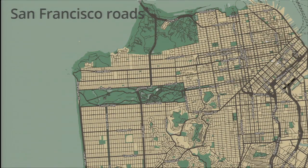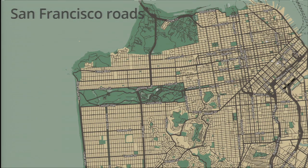Contrast that with another map — this is a map all about San Francisco roads. The information we've removed is everything except the road labels. The roads themselves are dark and very prominent, and in general we've chosen a heavier color scheme, so the overall map feels a lot more serious and somber.